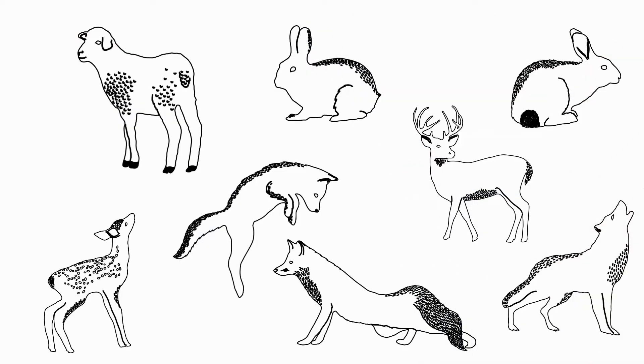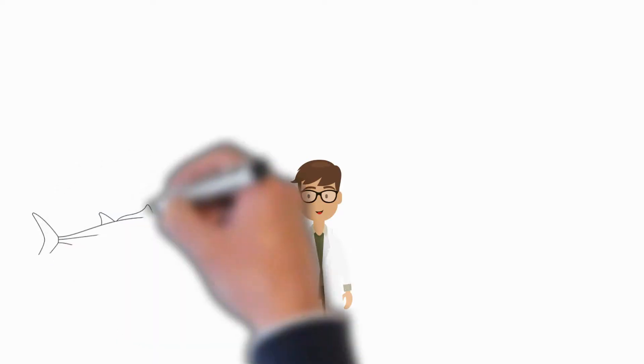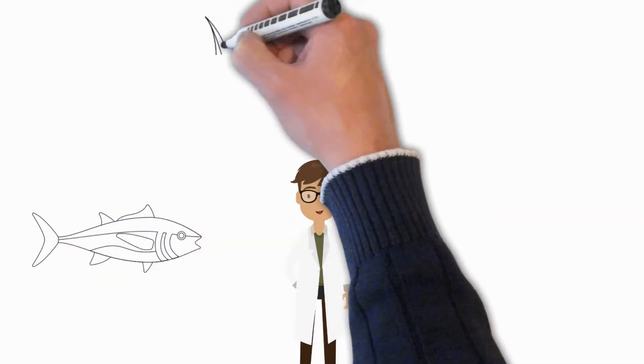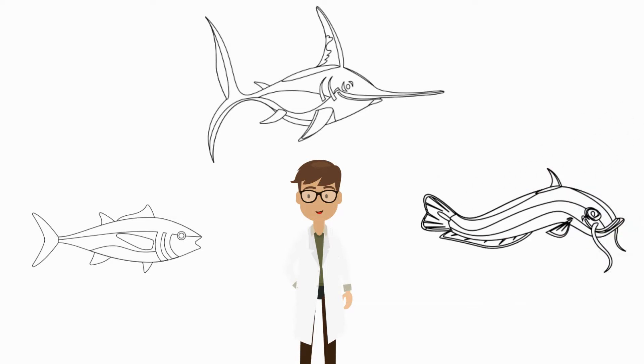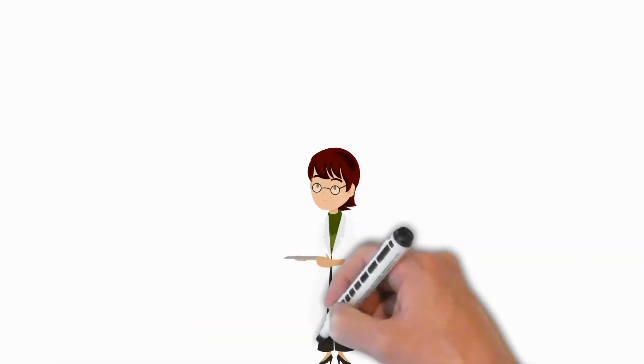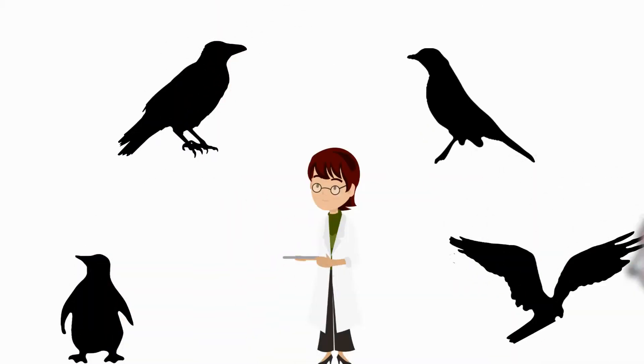What about animals? Do you like animals? Science covers the study of animals. For example, an ichthyologist specializes in studying fish like salmon, swordfish, or eels. An ornithologist studies birds such as robins, penguins, ravens, or eagles.